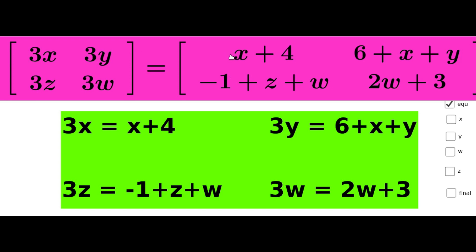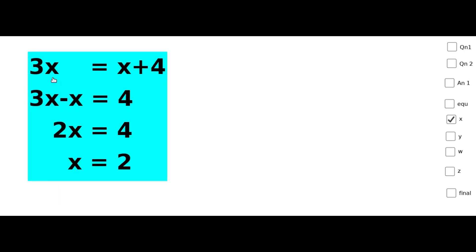Equating corresponding terms of these two matrices gives four equations: 3x = x+4; 3y = 6+x+y; 3z = -1+z+w; 3w = 2w+3. From the first equation: 3x-x = 4, so 2x = 4, therefore x = 2.